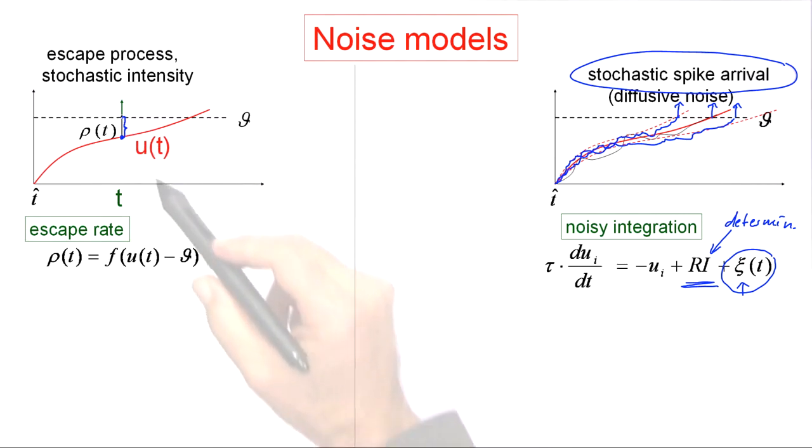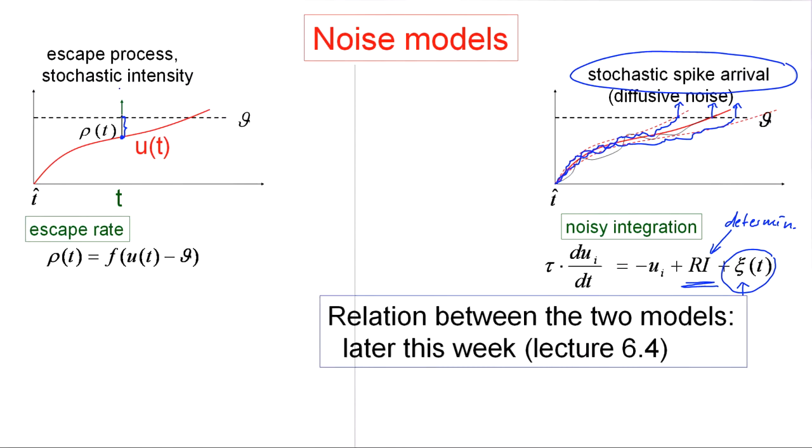Let's call this instantaneous intensity of firing the escape rate—the probability to escape across the threshold. This is the noise model we will discuss now.